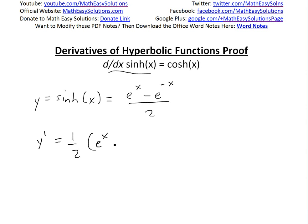And then minus the derivative of e to the negative x, which is e to the negative x, then using chain rule, the derivative of negative x is gonna be negative 1. So then this just becomes a positive, so we'll get e to the x plus e to the negative x divided by 2, and this is by definition just equal to cosh of x, or hyperbolic cosine of x.